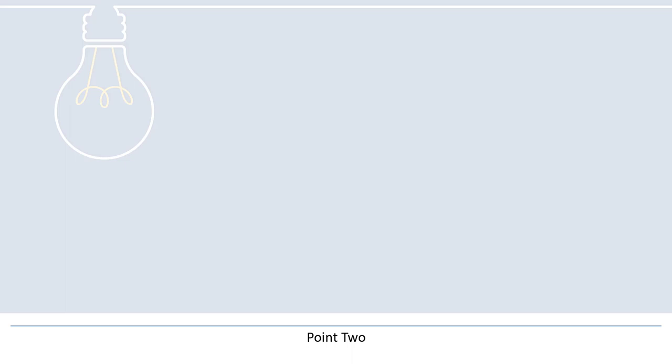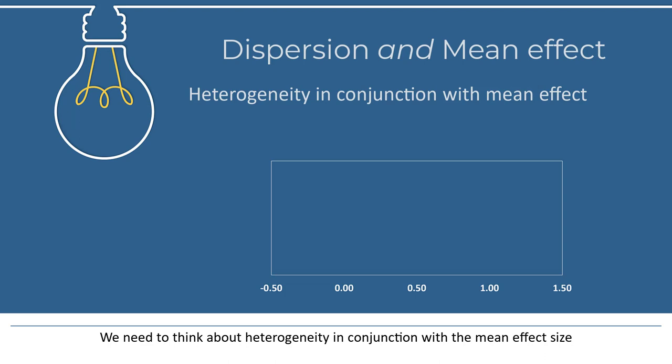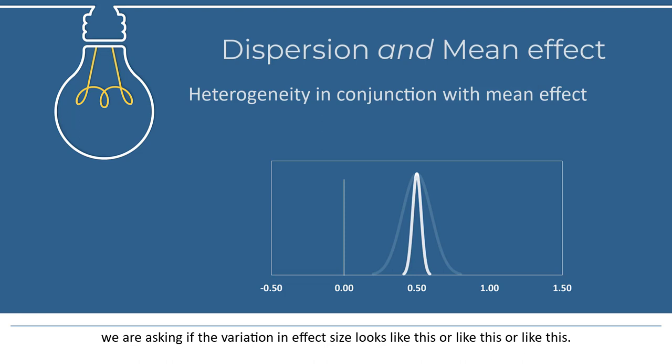Point 2. Most papers talk about the mean effect size as one issue and about heterogeneity as a separate issue. This is a serious mistake. We need to think about heterogeneity in conjunction with the mean effect size. Suppose that an effect size to the right of zero indicates that the treatment is helpful, while an effect size to the left of zero indicates that the treatment is harmful. When we talk about heterogeneity by itself, we're asking if the variation in effects looks like this, or like this, or like this. That's important, but we also need to know the location of these effects.